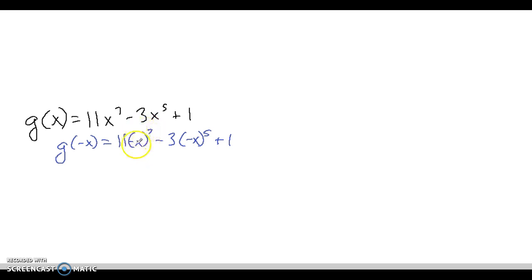I might as well have negative x to the sixth times negative x. Here, I might as well have negative x to the fourth times negative x. We determined in the previous problem that negative x to the sixth would be the same thing as x to the sixth. I multiply that by a negative, and I'm going to get negative 11x to the seventh.